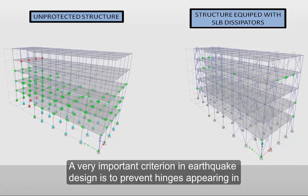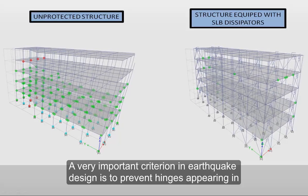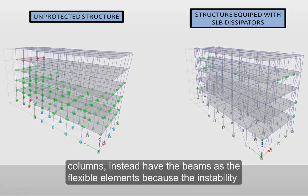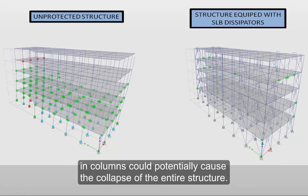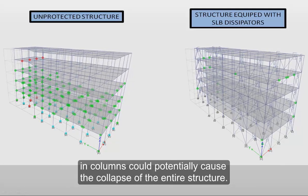A very important criterion in earthquake design is to prevent hinges appearing in columns, instead have the beams as the flexible elements because the instability in columns could potentially cause the collapse of the entire structure.